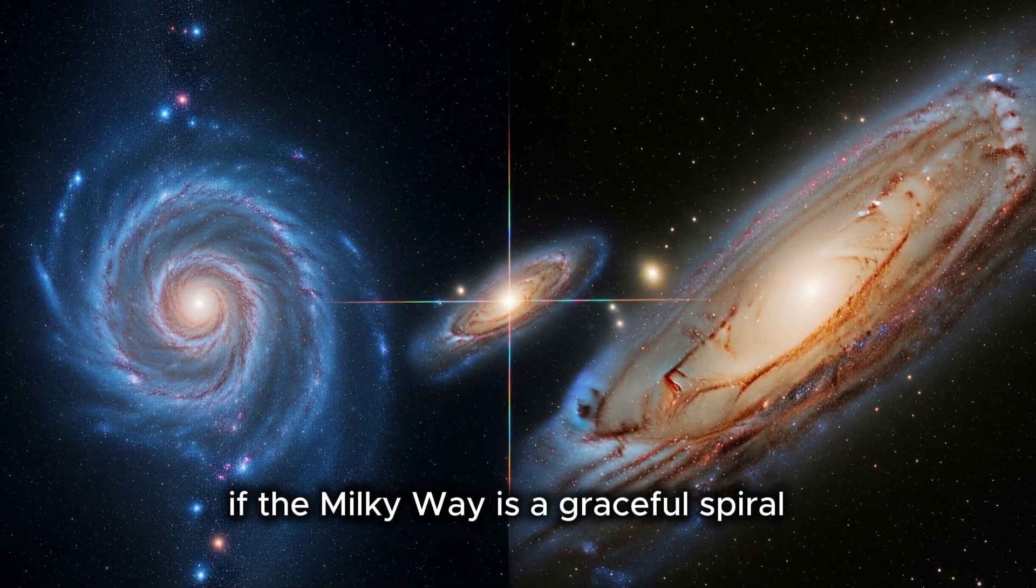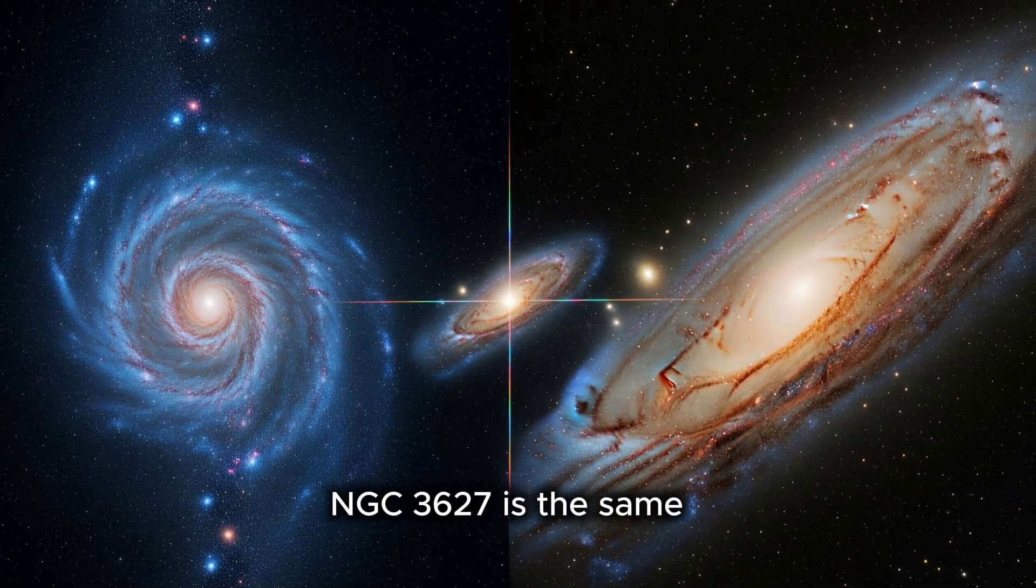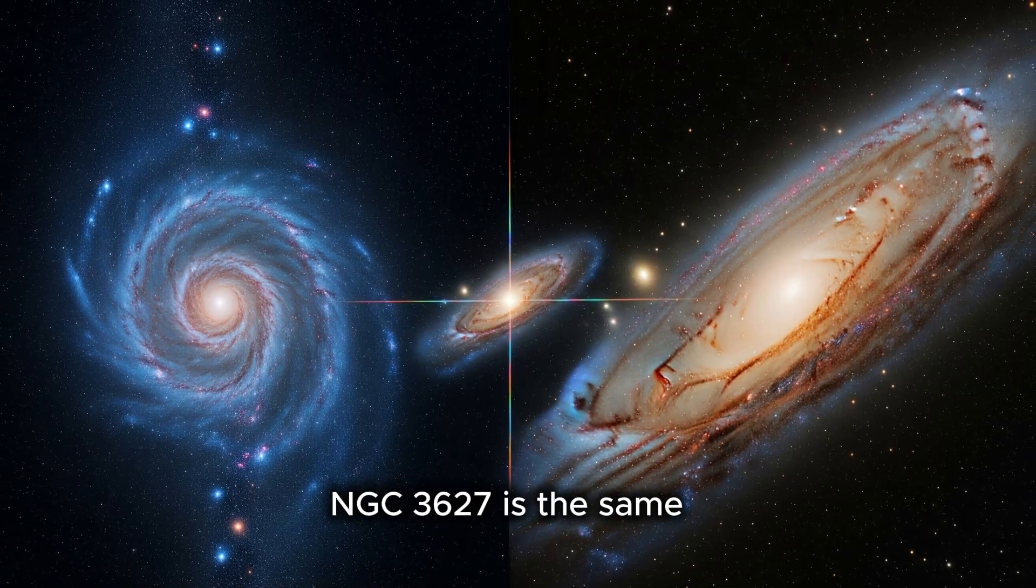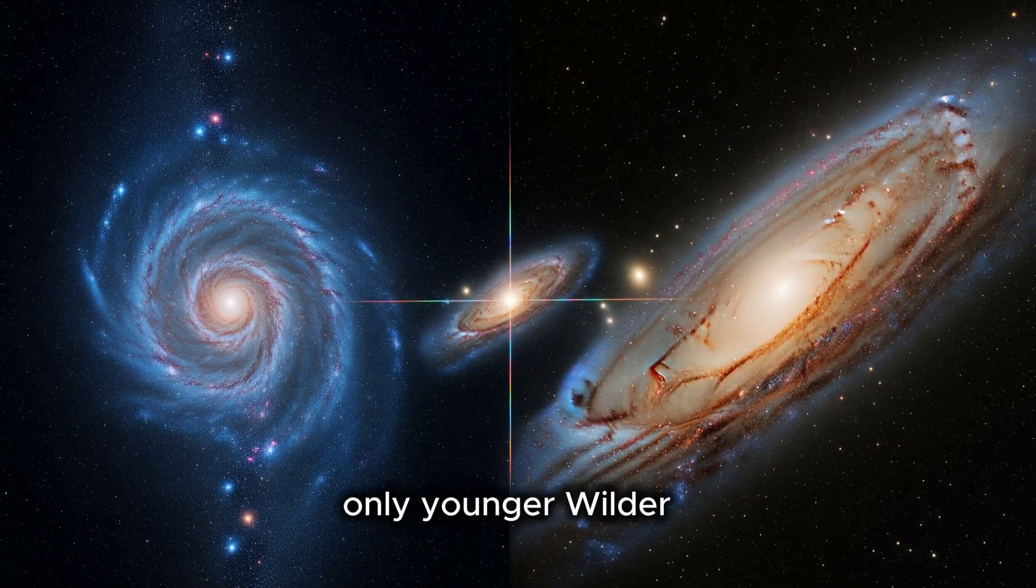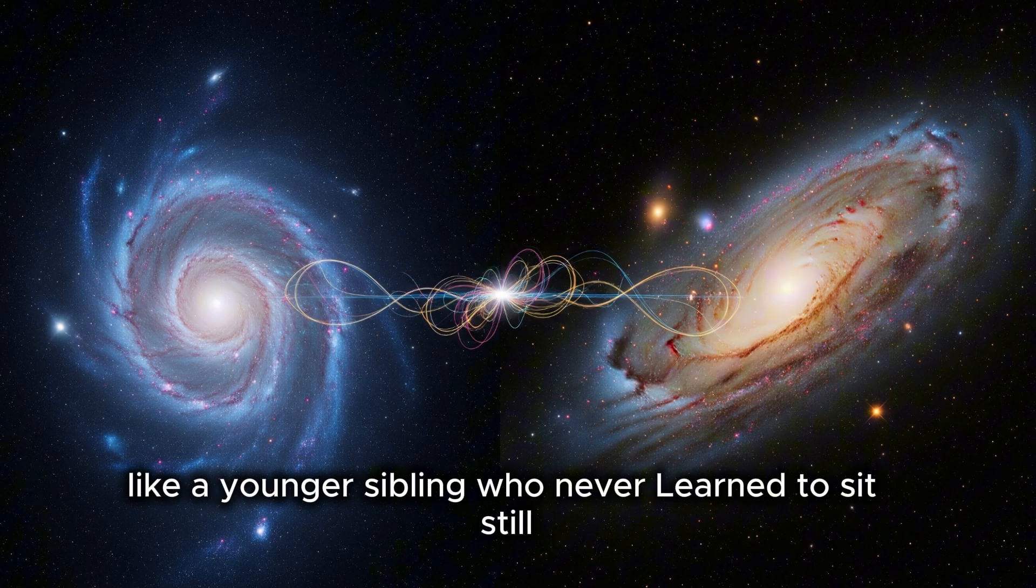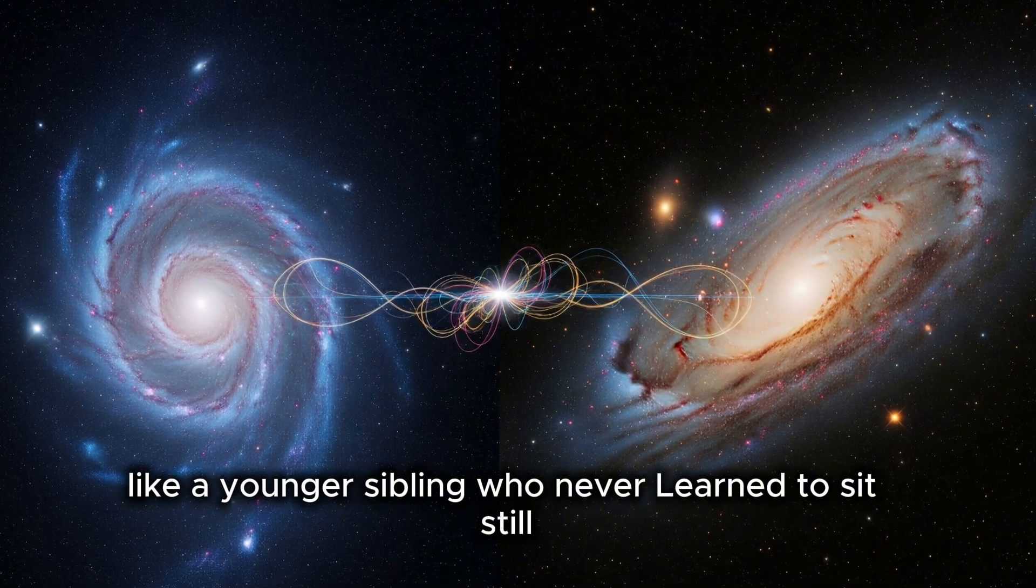If the Milky Way is a graceful spiral, NGC 3627 is the same, only younger, wilder. Like a younger sibling who never learned to sit still.